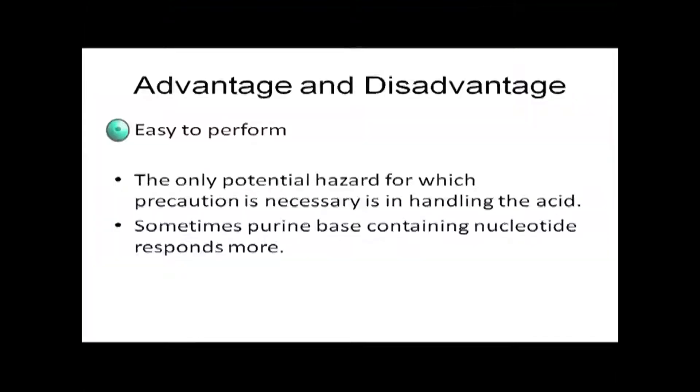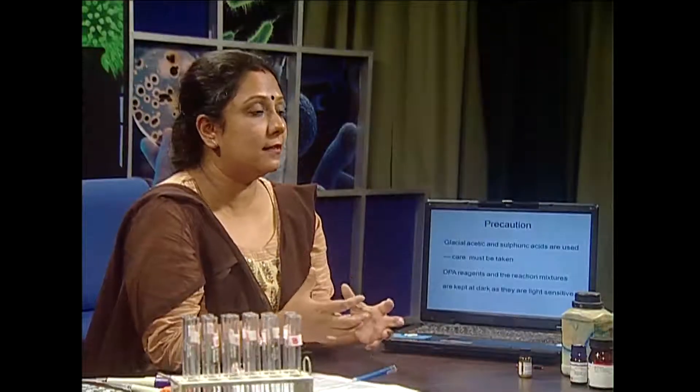Obviously it has some advantages and disadvantages. As an advantage, it is very easy to perform, very sensitive, and very specific. But disadvantages include handling very hazardous chemicals — glacial acetic acid as well as sulfuric acid. Also, purine nucleotides are sometimes much more susceptible to acid hydrolysis than pyrimidine nucleotides, but we can nullify this because we are having the same standards. We must also note that the diphenylamine reagent is very much light-sensitive, so we have to cover it to avoid faulty results.